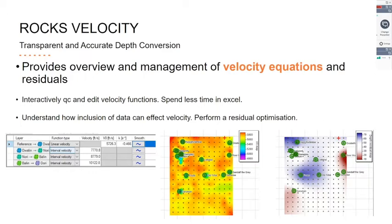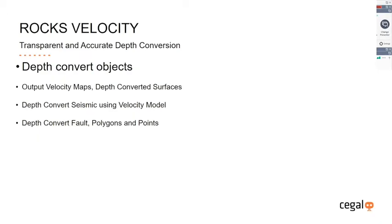The tool also offers overview and management of velocity equations and residuals, allowing interactive QC and editing of velocity functions — spending less time in Excel — and showing how including different data affects velocity. Once happy with the model, you can perform residual optimization. You can then depth convert seismic interpretations as surfaces, faults, polygons, and points in Petrel, and output velocity maps, k-maps, and V-nought maps at any stage.